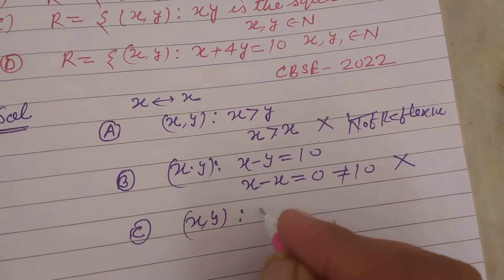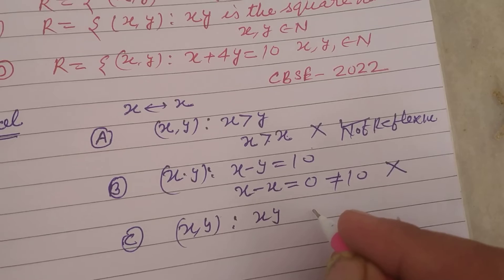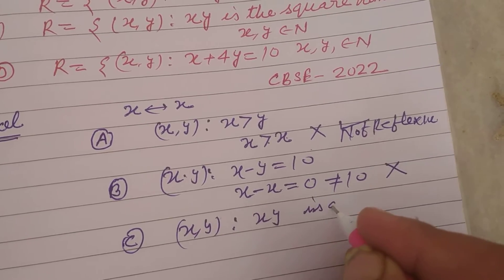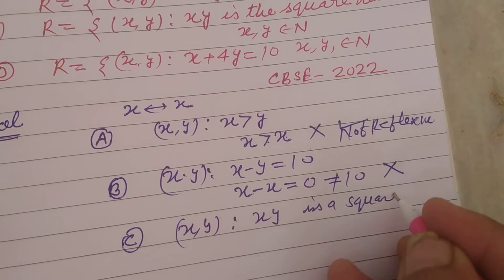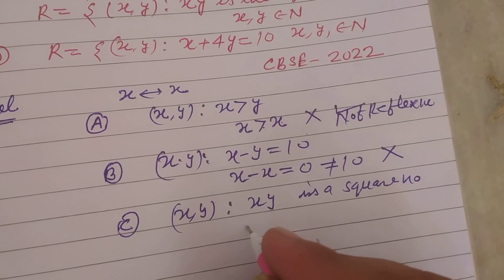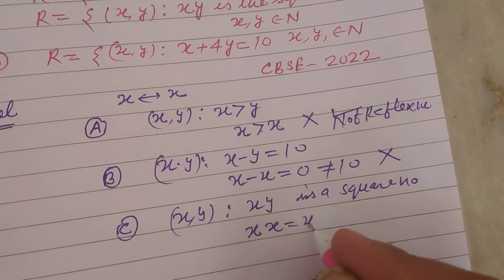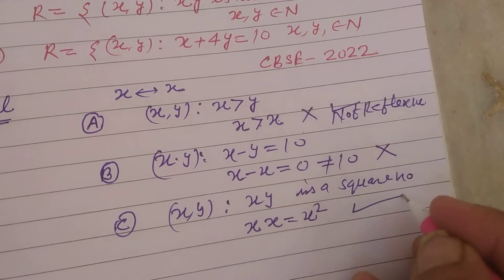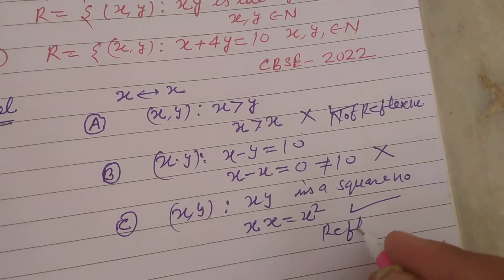(x, y) are related so that xy is a square number. So when we put x to x, we got x square, which is a square number. So it is a reflexive relation.